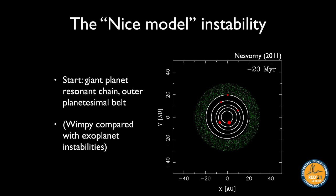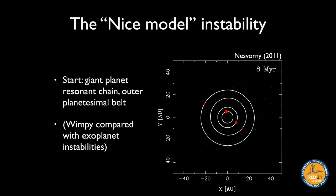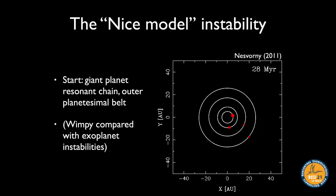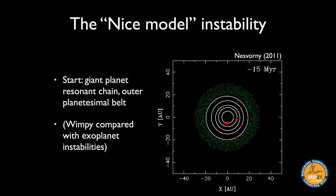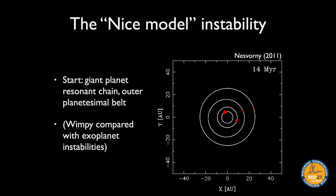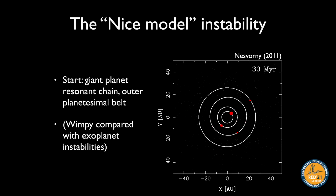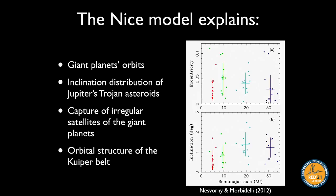Interactions between the planets and the outer belt lead to an instability in the planets' orbits and clearing of most of that outer material. In this animation there are actually five planets, and four survive on orbits very close to their current ones. They start on compact resonant orbits, go unstable after some time, clear away the vast majority of the outer disk of planetesimals, and land on or near their current orbits.